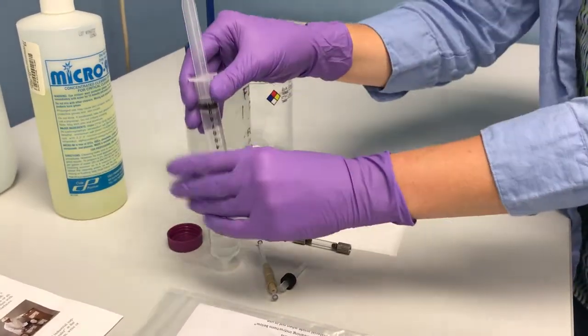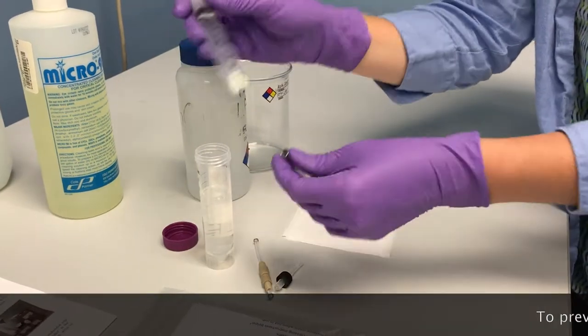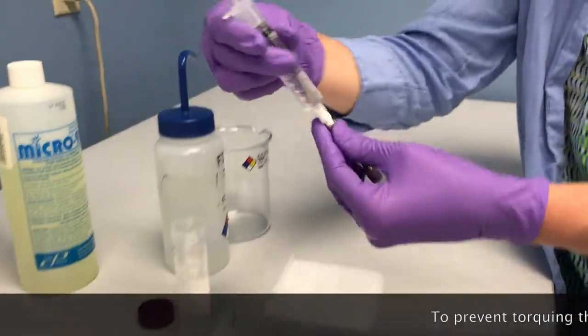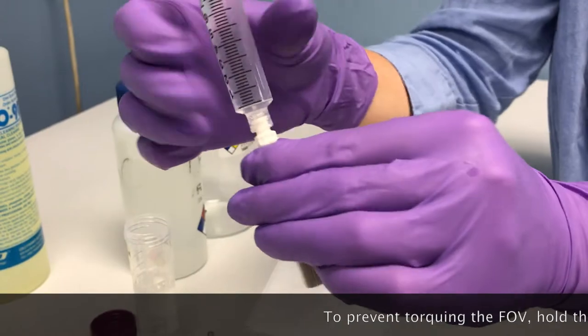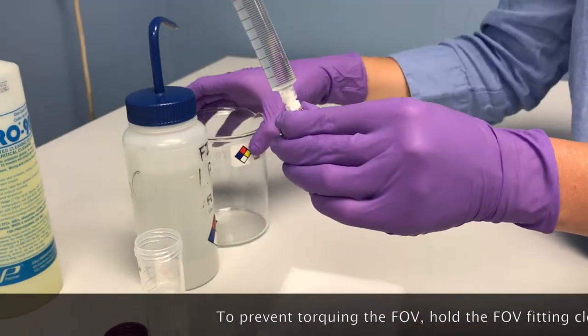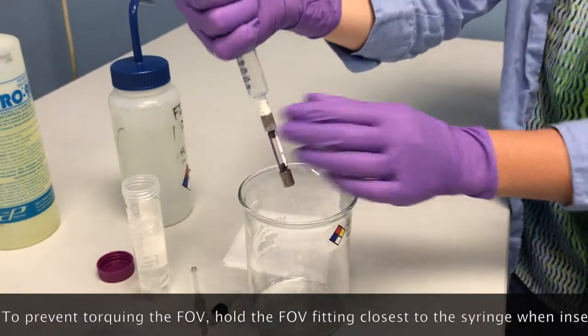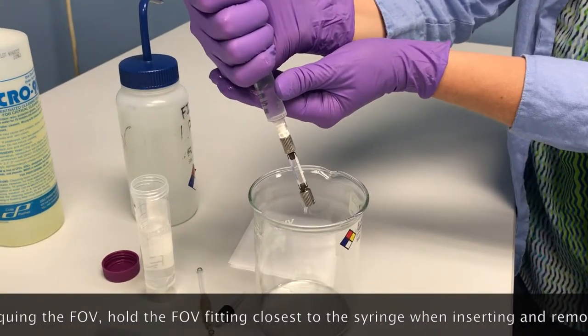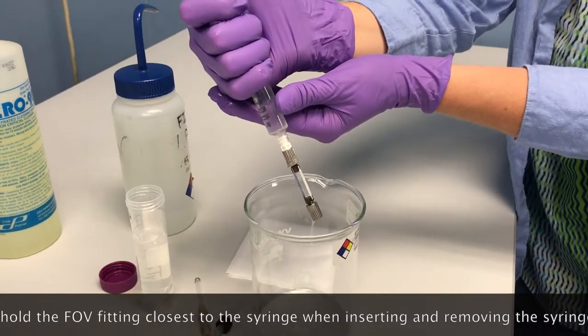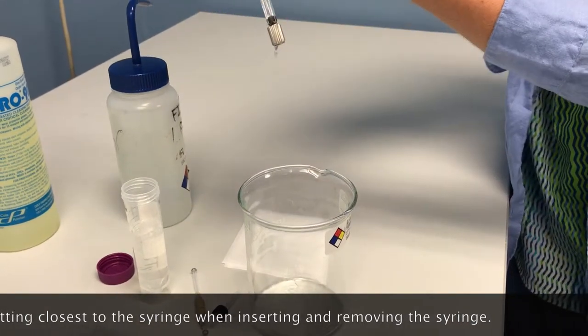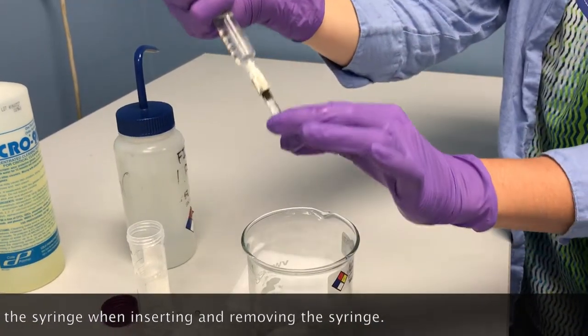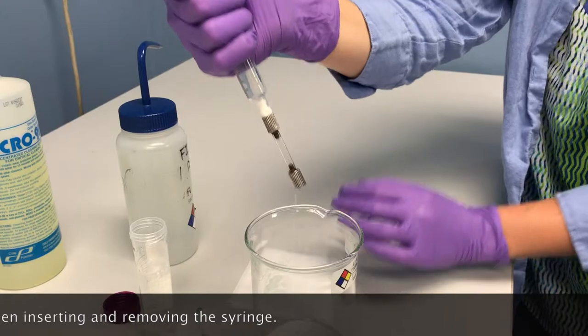Using your syringe, pull up some of your cleaner, attach your luer lock fitting to your flow cell, your FOV. Using a waste beaker, very gently depress the syringe and force through some of the enzymatic cleaner. You will see the cleaner dispensed through the other portion of the flow cell.